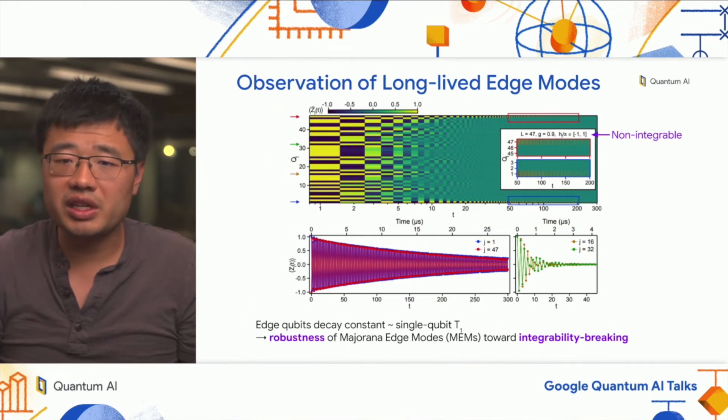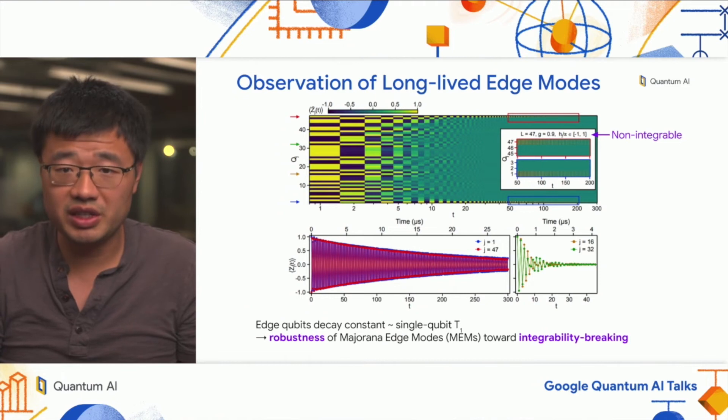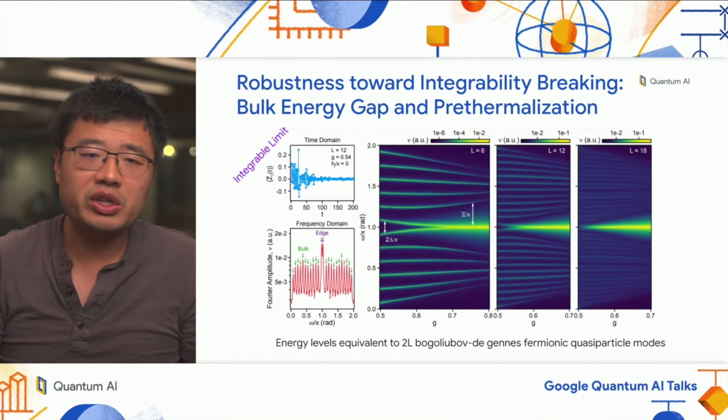Even more strikingly, we added a lot of local Z field, this H field, into the system. This breaks integrability of the quantum circuit. So even with integrability broken and with all this T1, T2 noise processes, we see very long-lived edge observables. In fact, they decay almost like the T1 of a single qubit. This alone is quite striking.